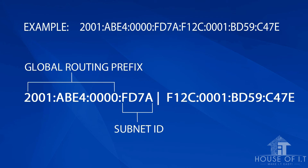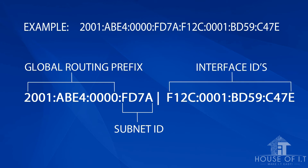For the subnet ID, it consists of the remaining bits in the first 64 bits after the global routing prefix. With this 128-bit address, cut it in half — 64 bits on the left and 64 on the right. The first 48 or fewer bits on the left are the global routing prefix, so the remaining 16 bits are used for subnet IDs, which can be split into more subnets. The last 64 bits are the interface IDs — unique IP addresses that will never be used as network IDs.